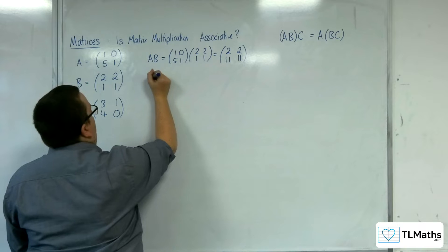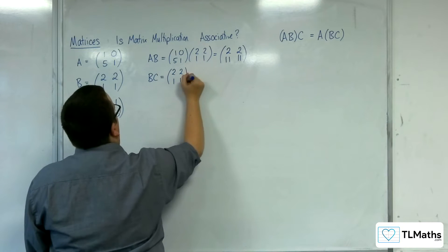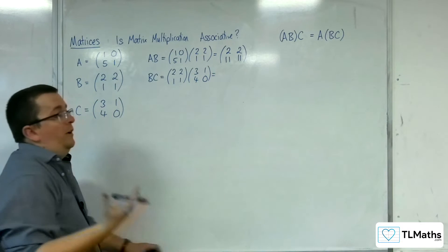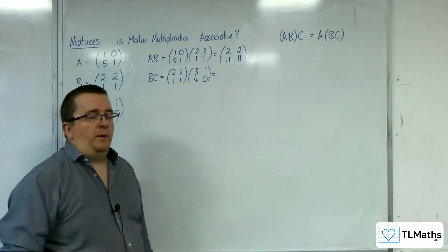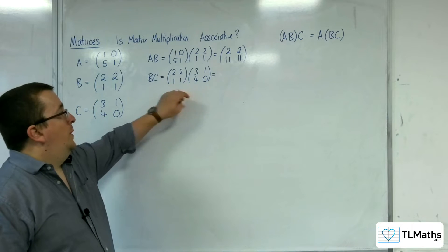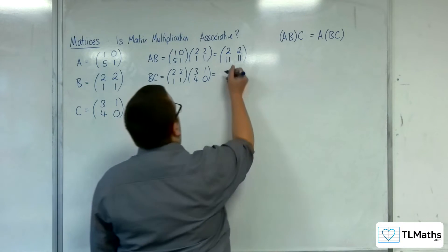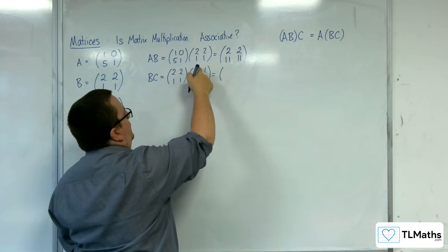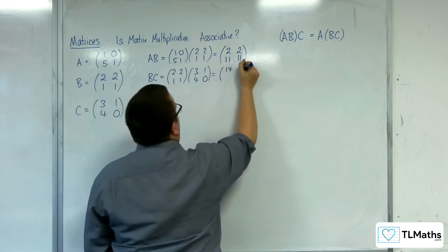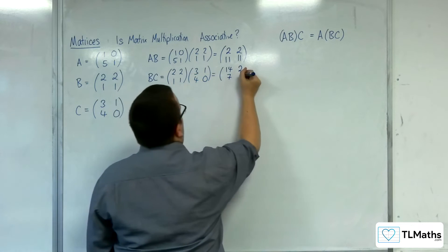And I'm going to need BC as well. So BC is [2,2;1,1] times [3,1;4,0]. Because matrix multiplication is not commutative, I need to make sure I'm doing B times C, since C times B may well be different. So: 2,2 times the column 3,4 — 2 lots of 3 is 6, 2 lots of 4 is 8, so 6 plus 8 is 14. Then 2,2 times 1,0 is 2. Then 1,1 times 3,4 — 3 plus 4 is 7. And 1,1 times 1,0 is just 1.